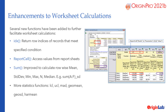Several new functions have been added to further facilitate worksheet calculations, such as the IDX function to return row indices of records that meet specified conditions, and the report cell function to access values from report sheets. Additionally, the SUM function has been improved to calculate row-wise mean, standard deviation, min, max, etc., and more statistics functions are available.